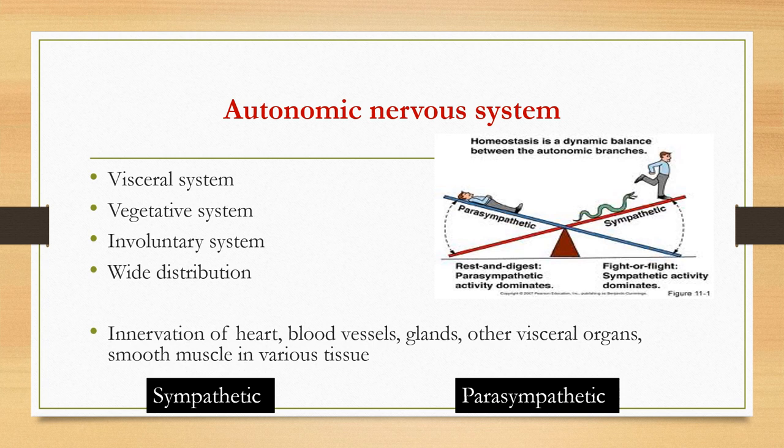When you are at rest and digesting food, parasympathetic activity is dominant. When you are under stress — whether physical, emotional, or verbal — fight-or-flight sympathetic activity becomes dominant. The innervation of the heart, blood vessels, glands, other visceral organs, smooth muscle, and various tissues are all activated by this system.